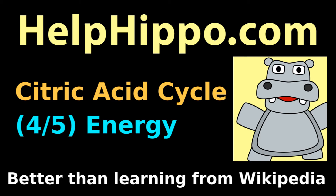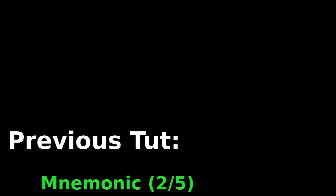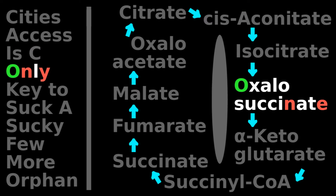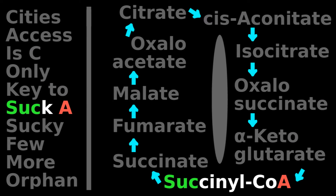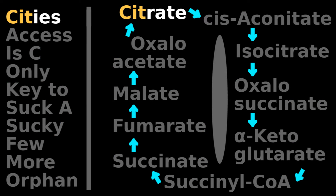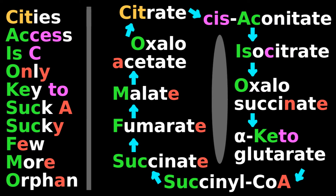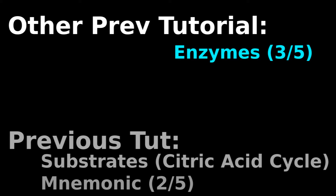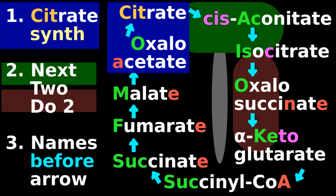Help Hippo, better than learning from Wikipedia. Our previous tutorial provided a mnemonic to learn the substrates of the citric acid cycle: 'City access is the only key to suck a sucky few more orphaned cities.' And our previous tutorial explains how to guess the enzyme name based on the name of the substrate that is near that enzyme.